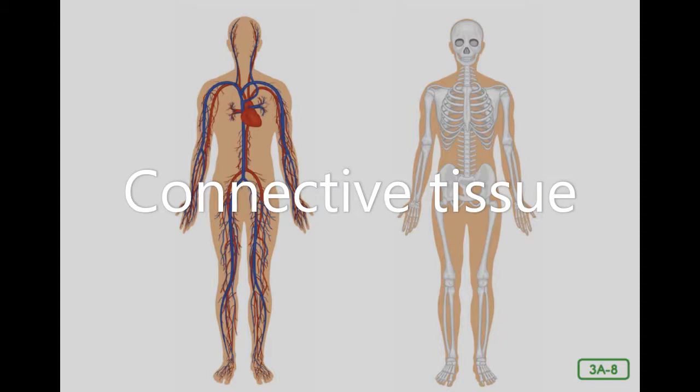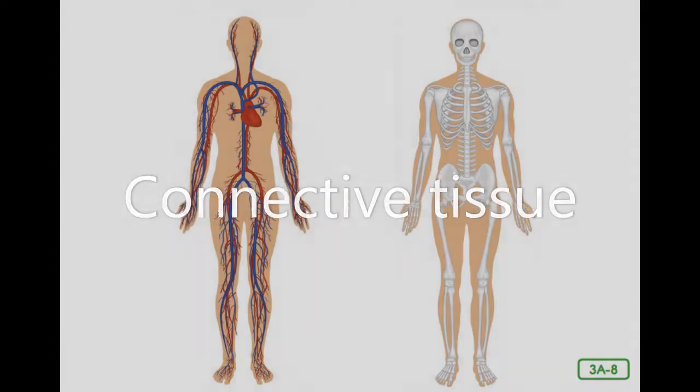Fat is a connective tissue, padding your body and supplying it with energy. You may be surprised to learn that blood is also a connective tissue, but think about it. This liquid tissue flows throughout your entire body and connects all of its many parts.